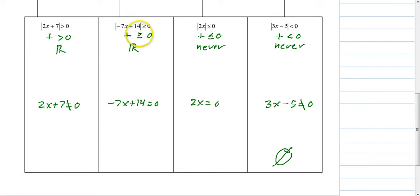And if you look at this one, it's saying that it can be greater than zero, it can be positive, which is what it's always going to be, but it can also equal zero. So there's no reason to solve anything. Everything's going to work. It's always going to be positive or equal to zero.